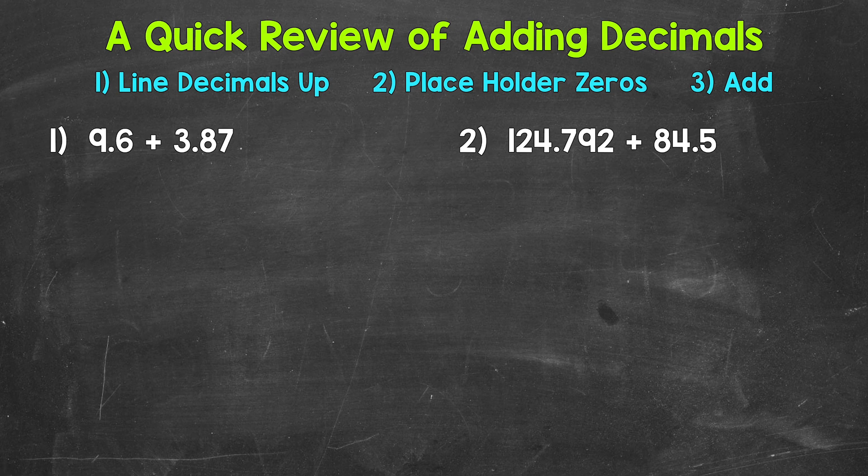Now when we add decimals, the first thing that we want to do is line the problem up correctly, and we do that by lining the decimals up. That's going to line up all of our places. So let's rewrite this problem vertically, underneath here: 9 and 6 tenths plus 3 and 87 hundredths. So our decimals are lined up. That means our places are going to be lined up.